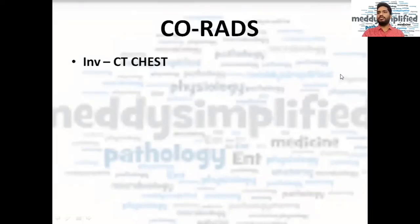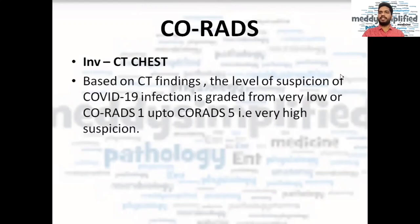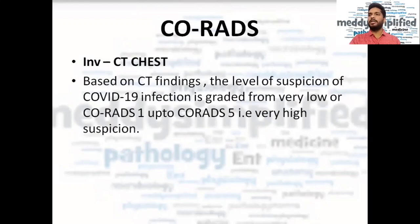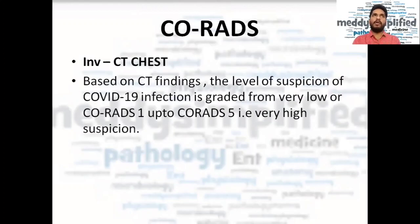In CORADS, the investigation we perform is a CT scan, and based on those CT findings we get a conclusion to know the level of suspicion of COVID-19 infection in a person. It is graded from CORADS 1, that is very low suspicion, up to CORADS 5, that is very high suspicion.